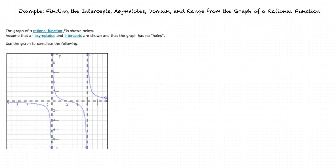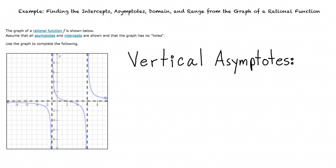We're first asked to find any vertical asymptotes. A line is a vertical asymptote if the function increases towards infinity or decreases towards negative infinity as it approaches the line from the left or from the right. We see that this happens for the vertical line x equals negative 1 and x equals 6. We know that these lines are vertical asymptotes because as the function approaches from the left or right, the value of the function approaches positive or negative infinity.